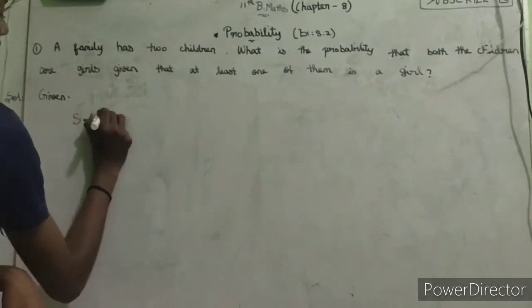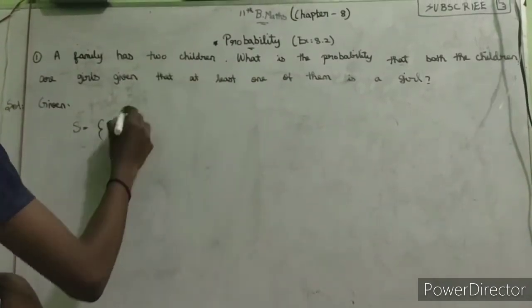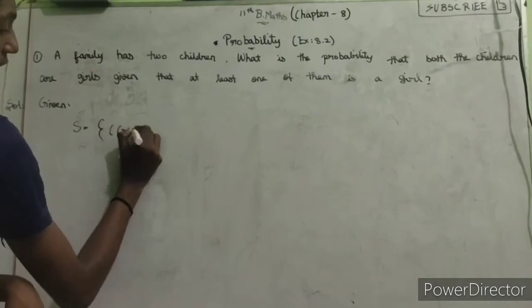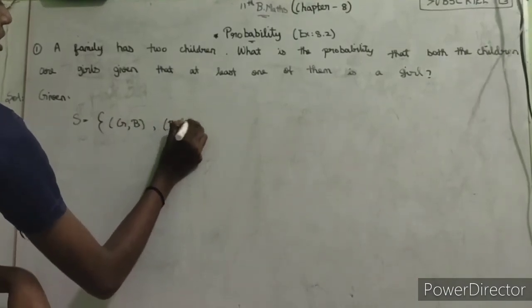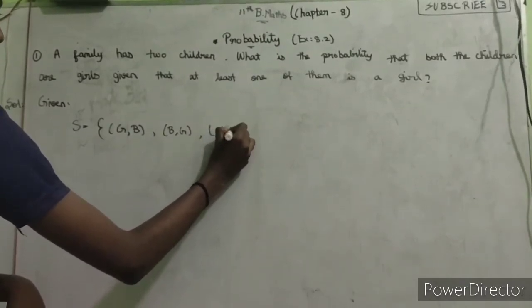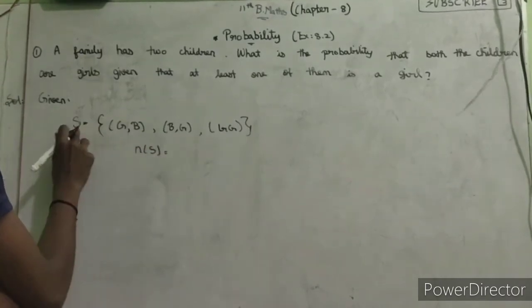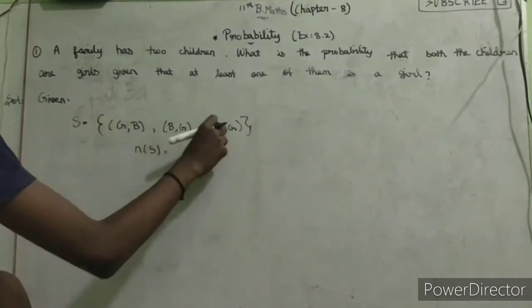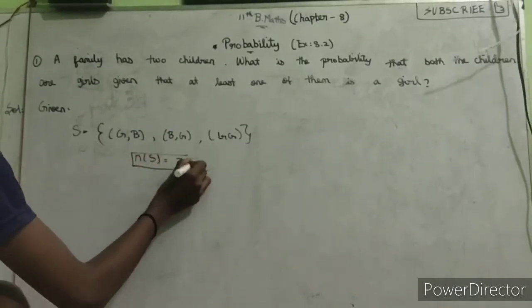Then the two children can be one girl and one boy, or boy and girl, or else girl and girl. So the sample space S equals (G,B), (B,G), (G,G). That gives us n(S) equals 1, 2, 3.